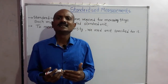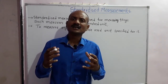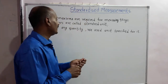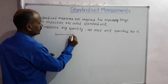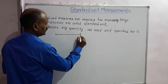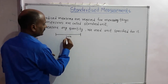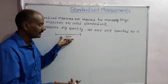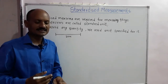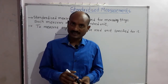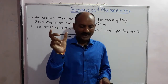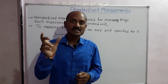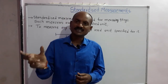One meter is accepted as a standard. For example, if the length of a cloth is 1 meter, 2 meters, or 3 meters, we can express it in those units. This brings us to an important question: why is there a need for standard units? What is a standard unit?